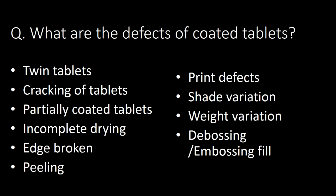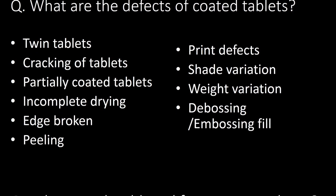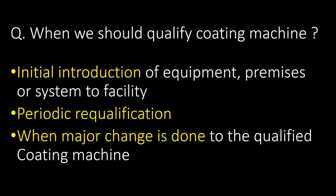What are the defects of coated tablets? Ten commonly observed defects of coated tablets are: twin tablets, cracking of tablets, partially coated tablets, incomplete drying, edge broken, peeling, print defects, shade variation, weight variation, and debossing or embossing feel.